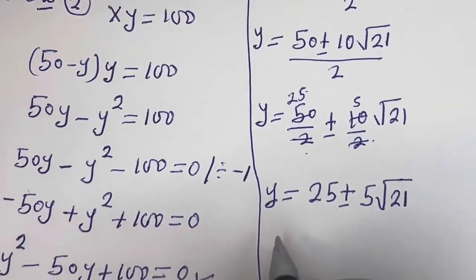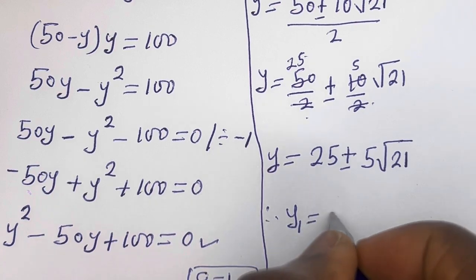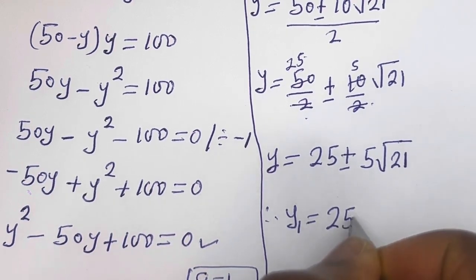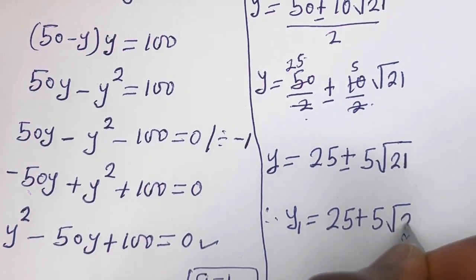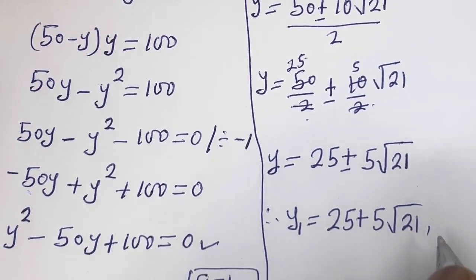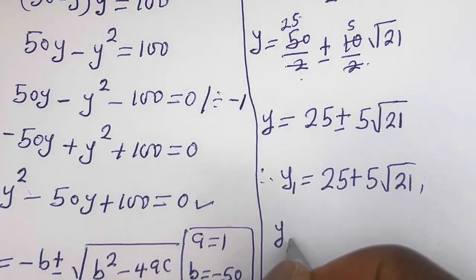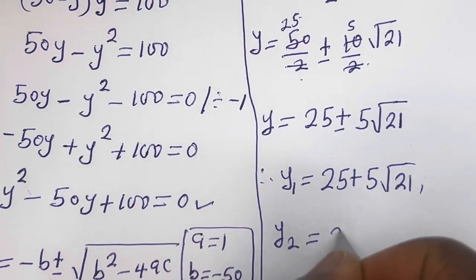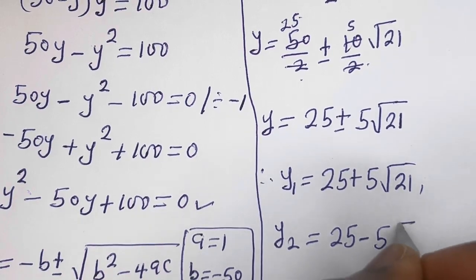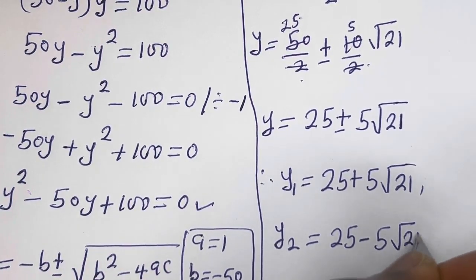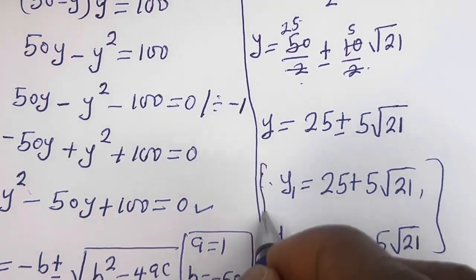Therefore, y1 is equal to 25 plus 5 square root of 21, and y2 is equal to 25 minus 5 square root of 21. These are the values of y.